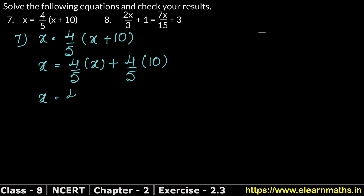So x equals 4 upon 5x plus — 5 ones are 5, 5 twos are 10, and 4 twos are 8 — so we write plus 8.